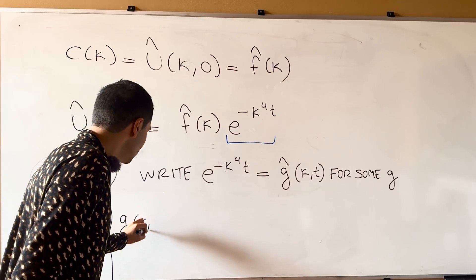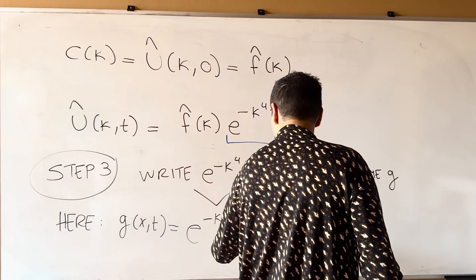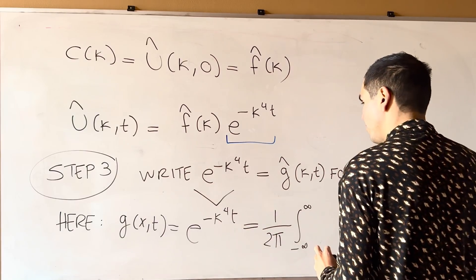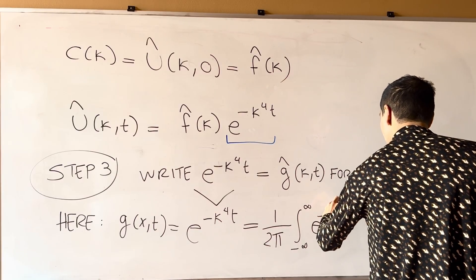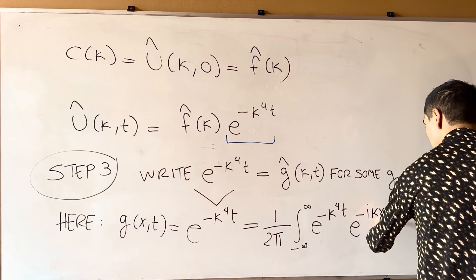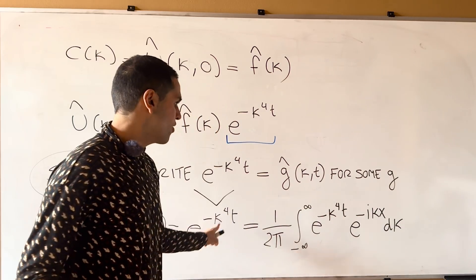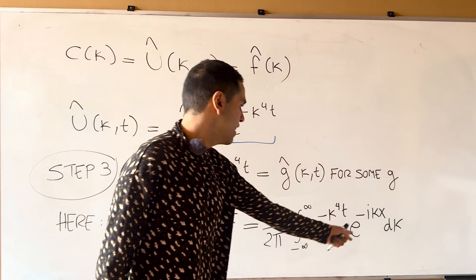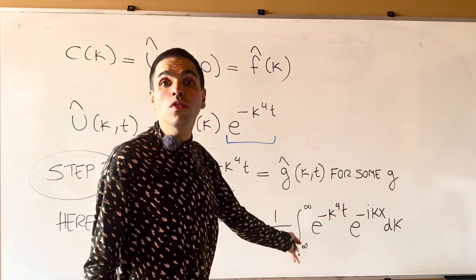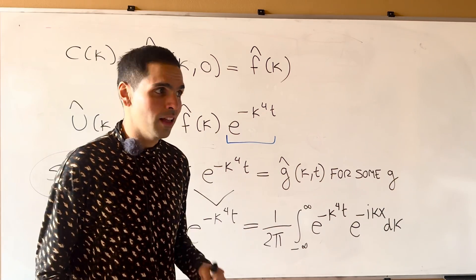So G of XT is the inverse Fourier transform of this function, which I like to remind you is 1 over 2 pi integral from minus infinity to infinity of E of minus kappa to the fourth T, and then E to the minus I kappa X, and then D kappa. So once again, 1 over 2 pi, whatever function we have, and E minus I kappa X, and to get a function of X we integrate with respect to kappa. Which, again, don't attempt to evaluate that integral. In this case it's not possible to do so, but at least we do have a formula in terms of integrals.